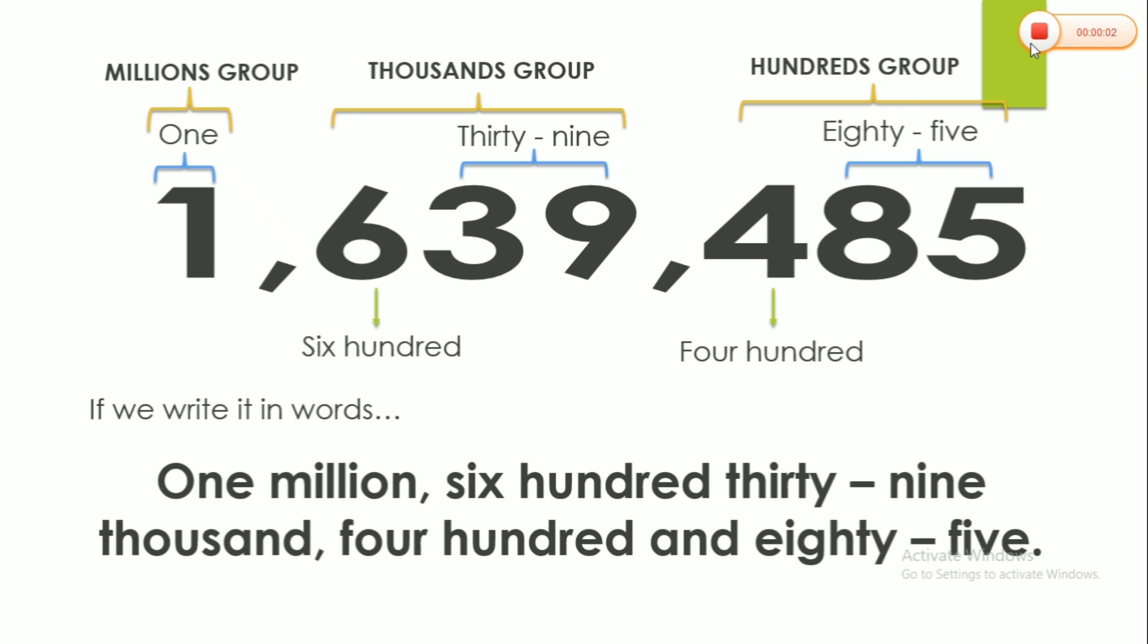So if we are going to write it in words, it will be one million, six hundred thirty-nine thousand, four hundred and eighty-five. Or if you don't want, you can cross out the word 'and'. You can just put four hundred eighty-five. So we have 2 answers. Okay.